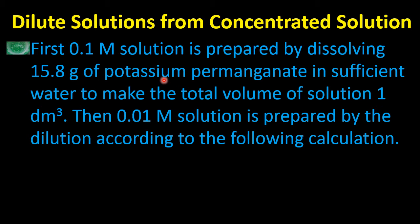The molar mass of potassium permanganate is 158 grams, but here we use 15.8 grams. We get this decimal because we are not preparing a one molar solution — we are preparing a 0.1 molar solution. So we add a decimal after the first digit in the molar mass of potassium permanganate, and dissolve it into water to make a total volume of one decimeter cube.